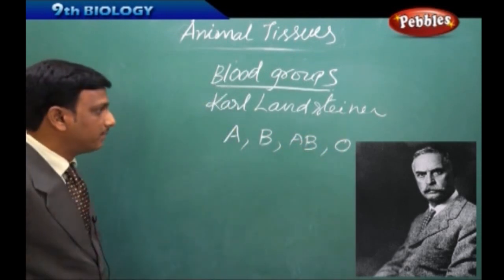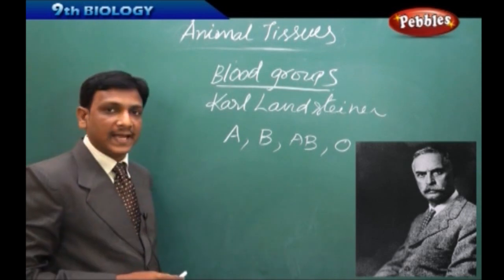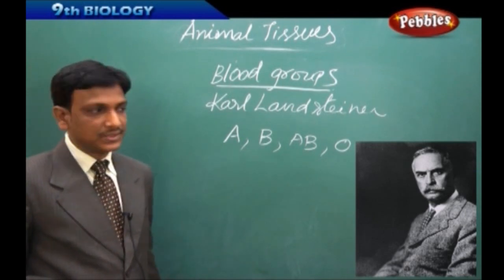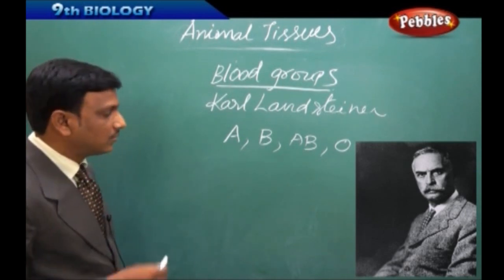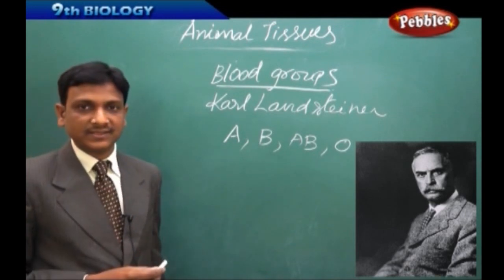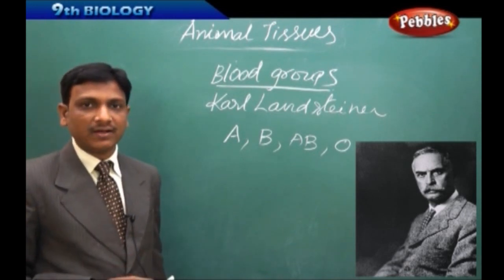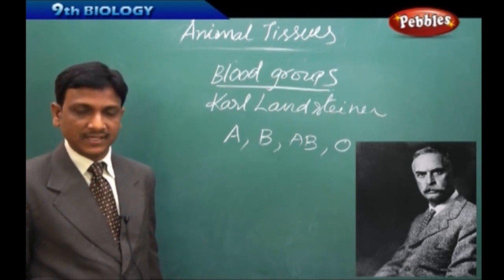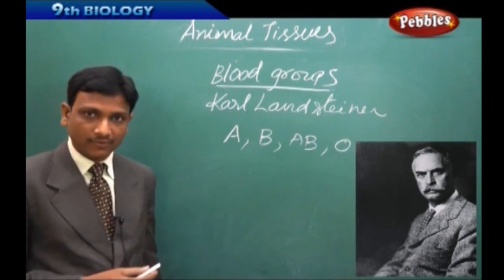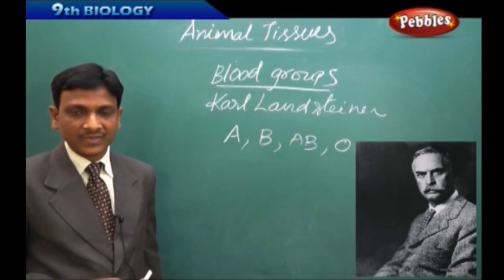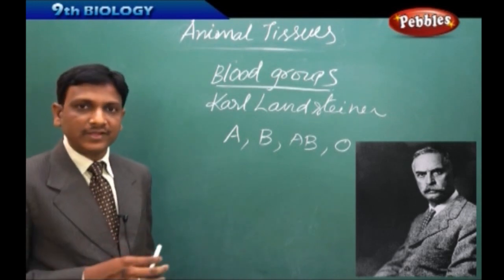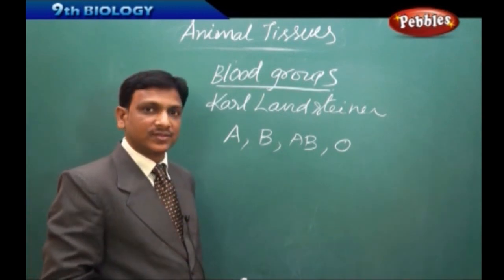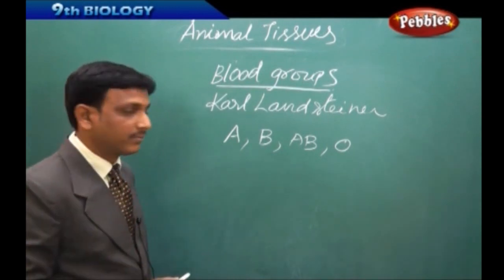He gave this grouping based upon the antigens and antibodies present in blood. In our blood, we have plasma, RBC, WBC, platelets, and other substances. Along with those, antigens and antibodies are also found in our blood.